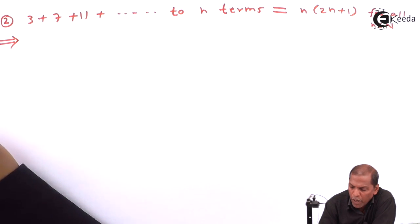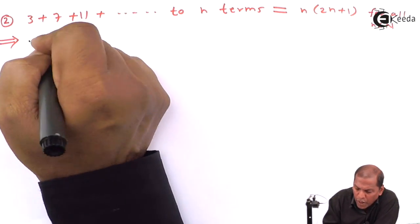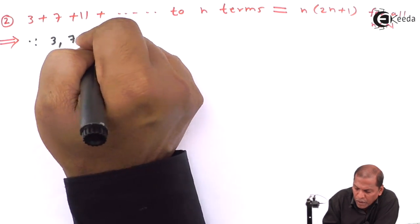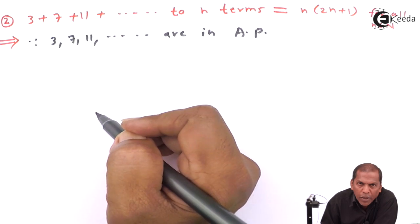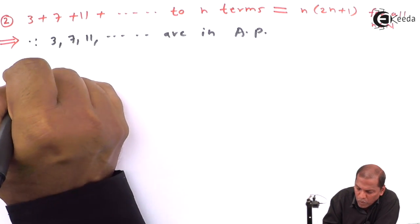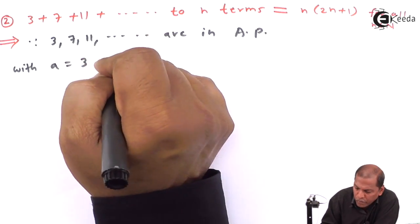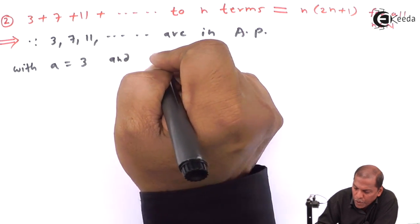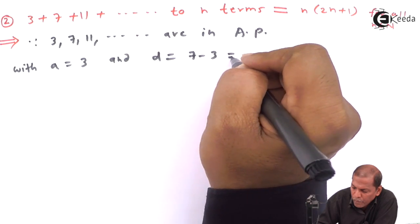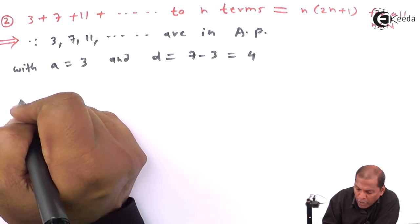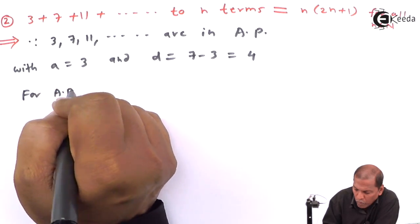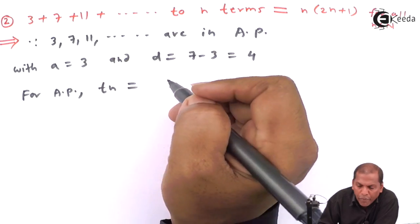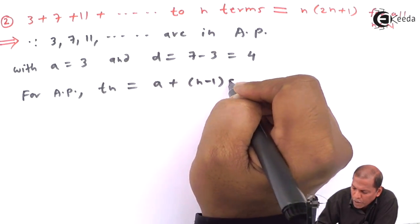In this problem, the last term is not given, so first of all we have to find the last term. Since the numbers 3, 7, 11, and so on are in arithmetic progression, with first term a equal to 3 and common difference d equal to 7 minus 3, which gives us 4. Then we write the formula for Tn for an AP.